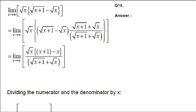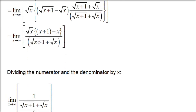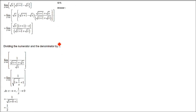So we are going to multiply it with the rationalization factor. RF we have to use here. This is minus, so multiply numerator and denominator by plus. So a minus b times a plus b gives a square minus b square. So you have x plus 1 minus x; the x's cancel, you have 1.